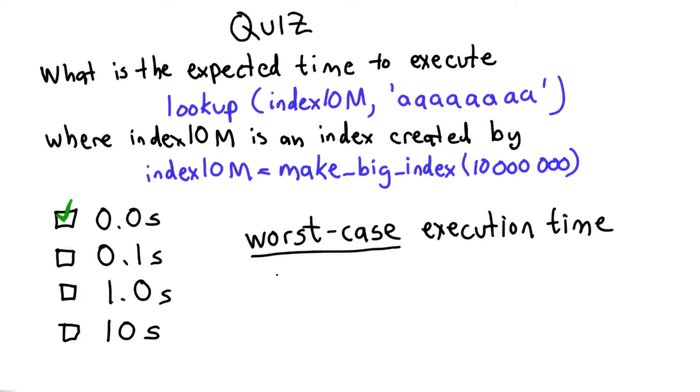Let's look at the code for lookup to understand more why the time scales the way it does and think about what the worst case execution time and what the average case will be.